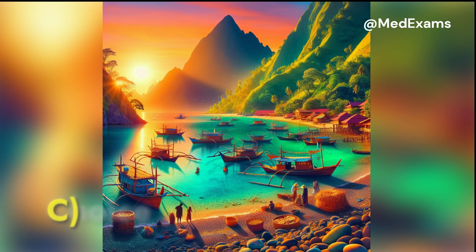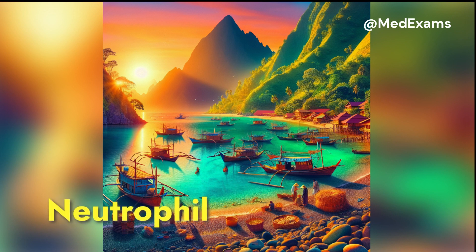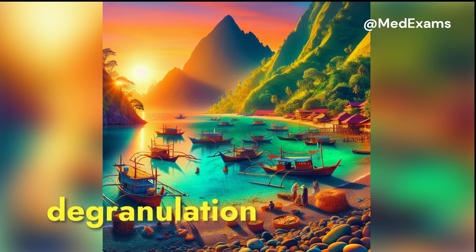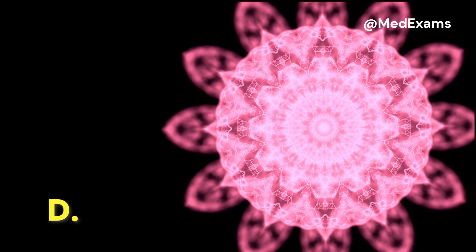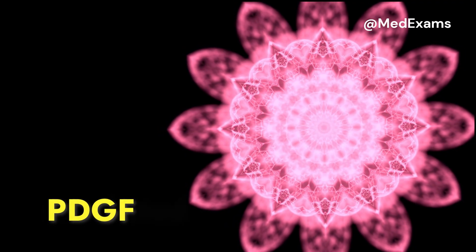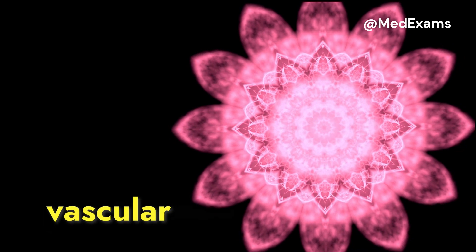Choice C: neutrophil extravasation and degranulation. Choice D: PDGF-mediated vascular proliferation.